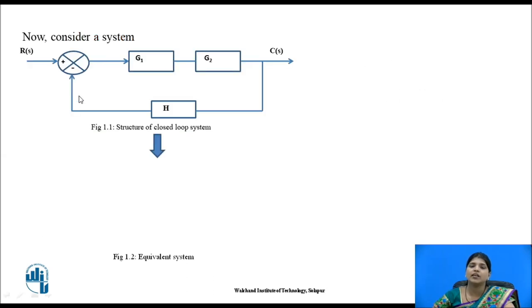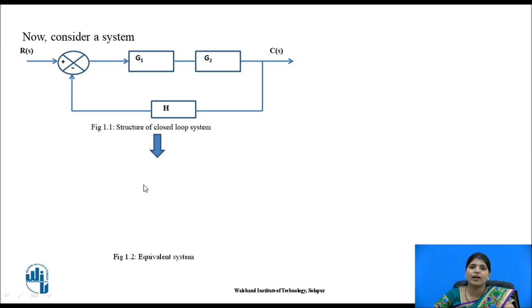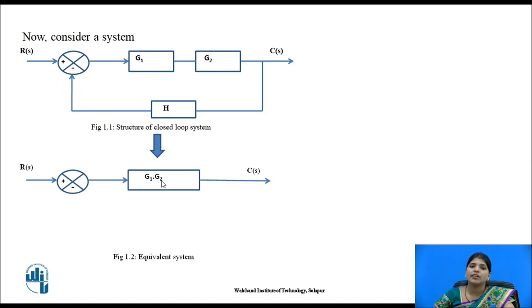Now consider a system for rule four. Here R(s) and the feedback signal are given to the summing point, where the inputs are added. The output is then given to G1. In this system, G1 and G2 are connected in series, so we need to reduce this block diagram. Since the blocks are in series, their transfer functions are multiplied together — G1 and G2 are multiplied.